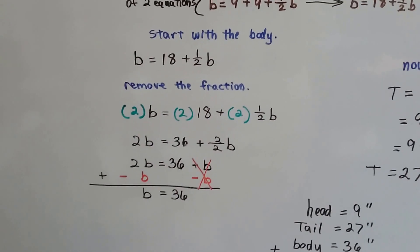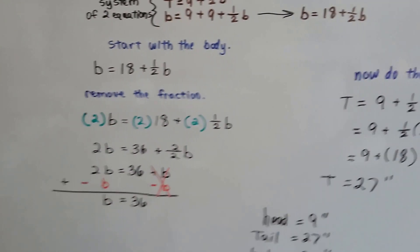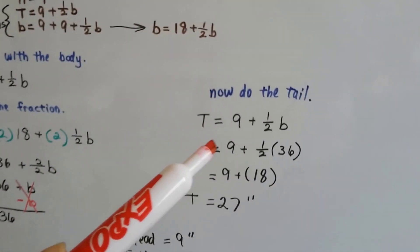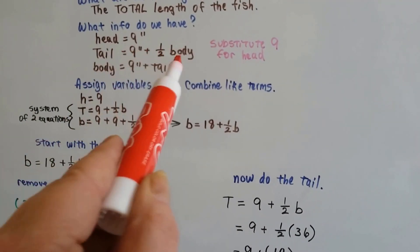So now we know the head is nine and the body is 36. Now we can do the tail. The tail was nine plus half the body, remember?